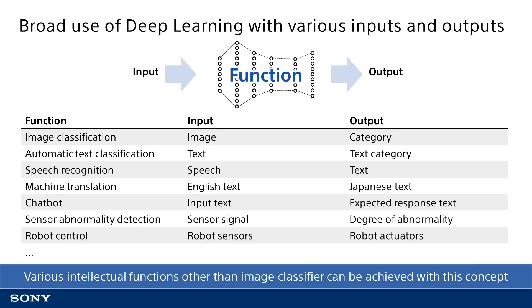For example, if an image input for image recognition is converted to text, it will function as automatic text classification. If the neural network is trained to output the type of text that was input, we have a model for classification of text rather than image classification. Using the same concept, if the input is a speech waveform recorded with a microphone rather than images or text, the output can be text, allowing the neural network to function as speech recognition.